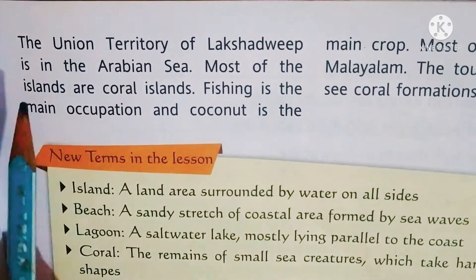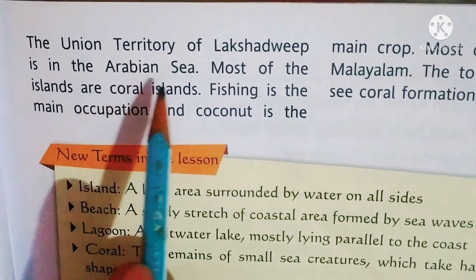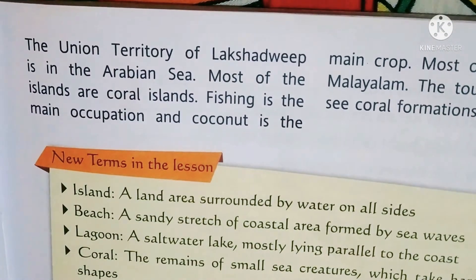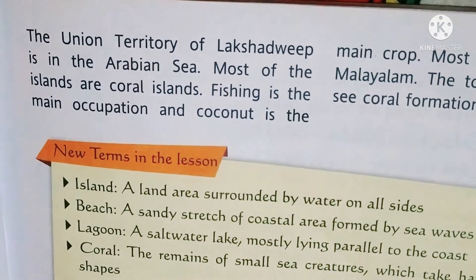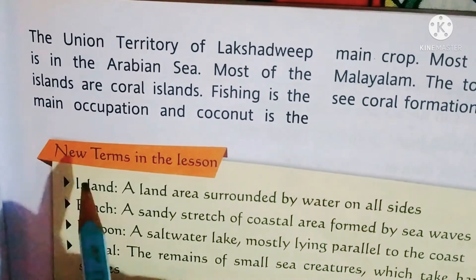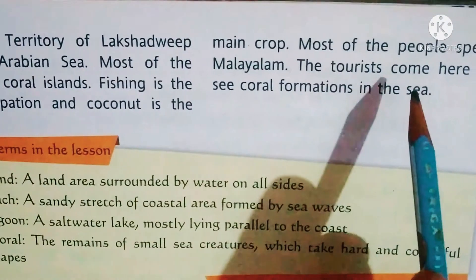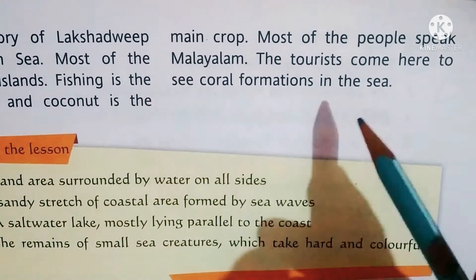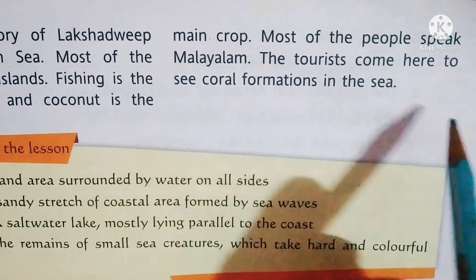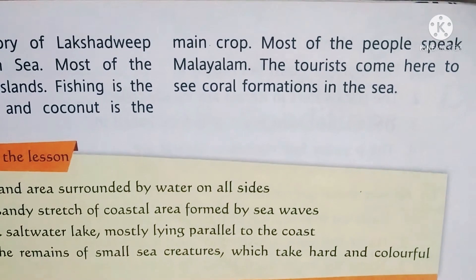Lakshadweep is in the Arabian Sea. Most islands are coral islands. Most people speak Malay. Fishing is the main occupation and coconut is the main crop. Tourists come here to see the coral reefs and the forests.